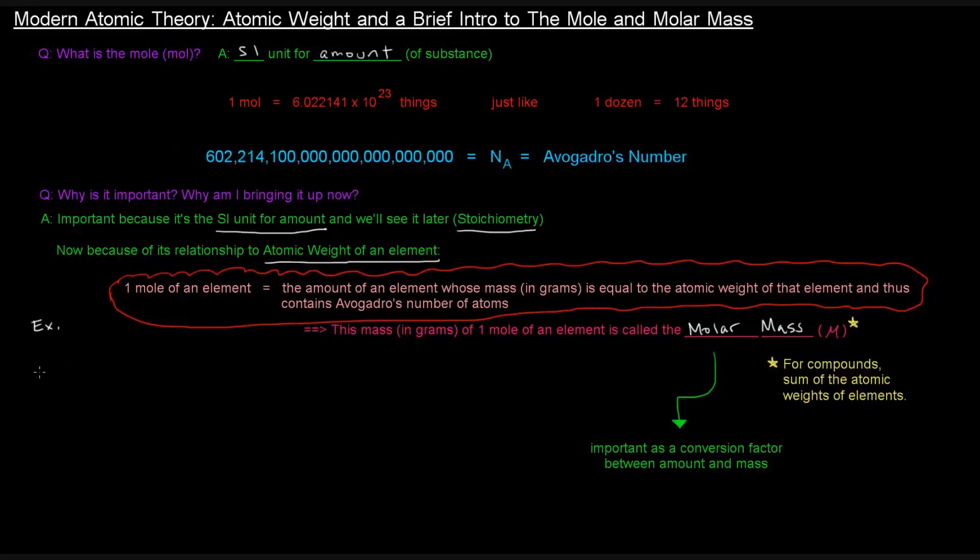If we have one mole of gold, okay, gold, one mole of gold, AU is the atomic symbol for gold. If we have one mole of gold, that is basically going to be equal to the atomic weight of that element.